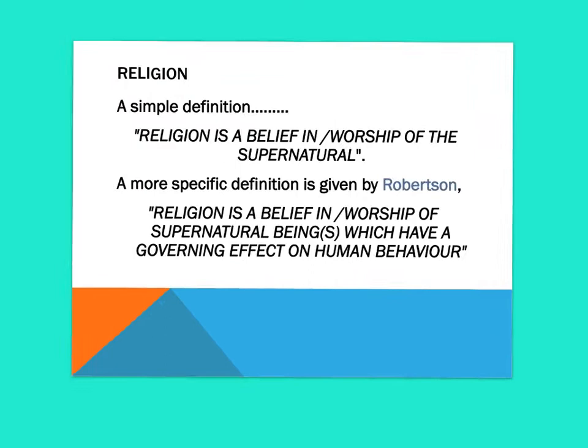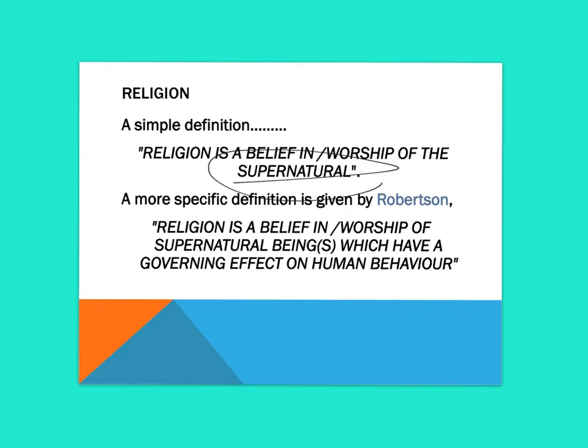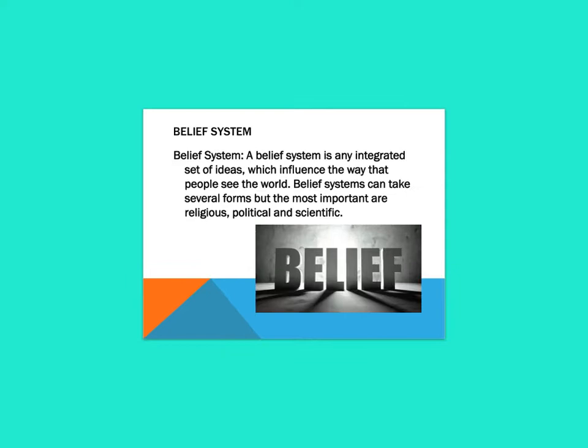A simple definition of religion: religion is a belief in worship of the supernatural. A more specific definition given by Robertson is that religion is a belief in worship of supernatural beings which have a governing effect on human behaviour — clearly giving defined guidelines as to how individuals should be acting in terms of religious beliefs and what they should be doing in society.